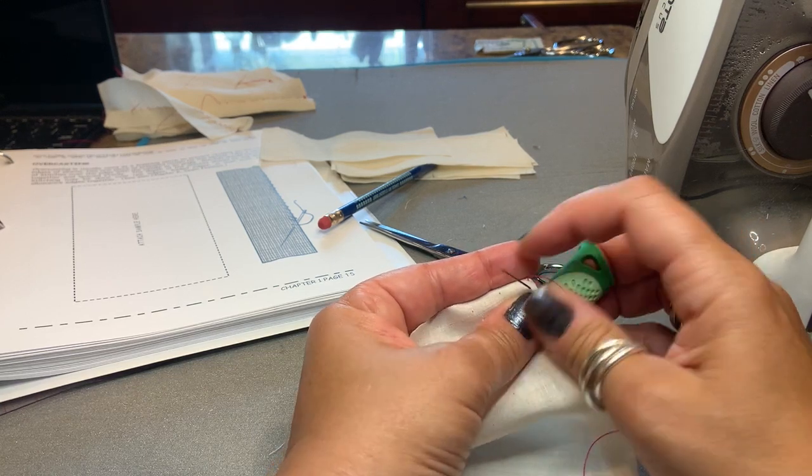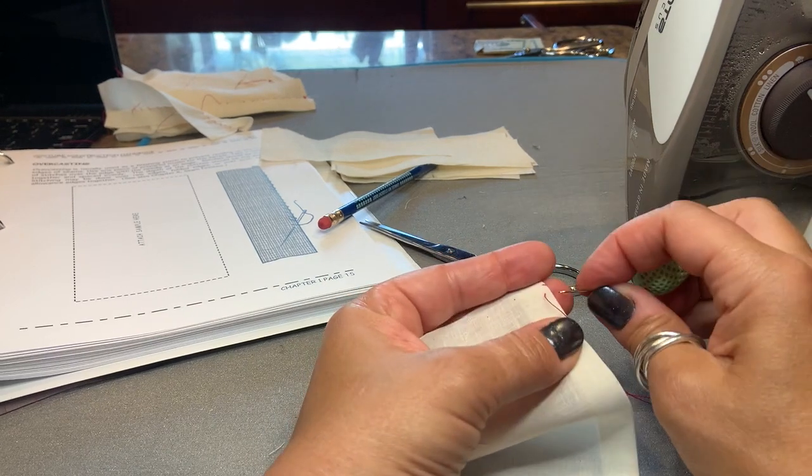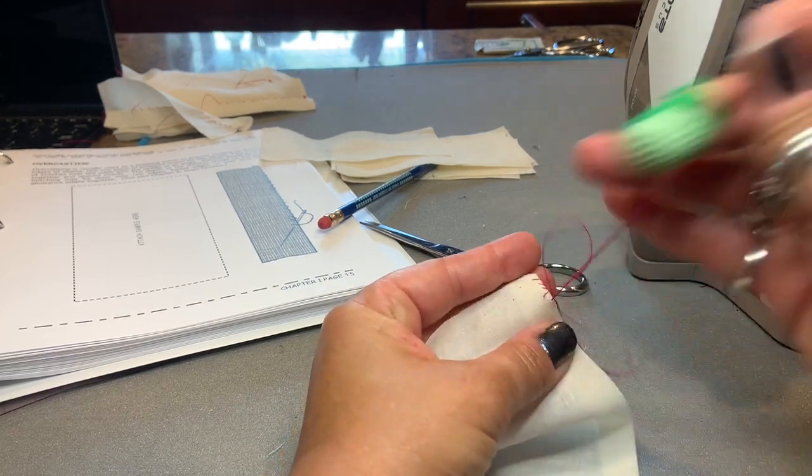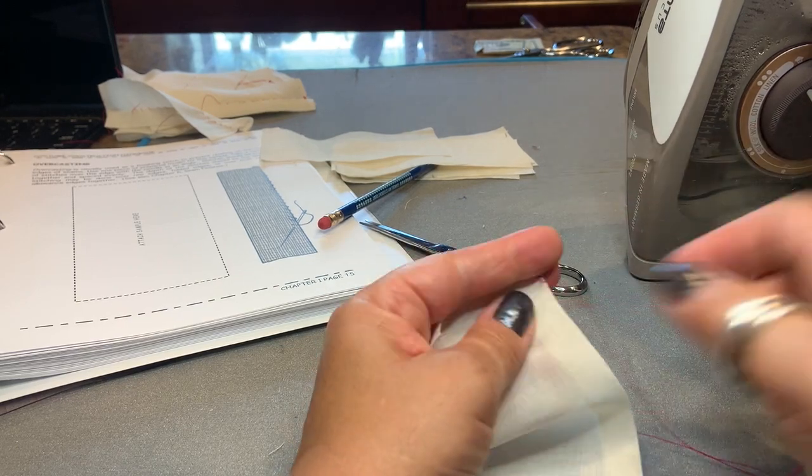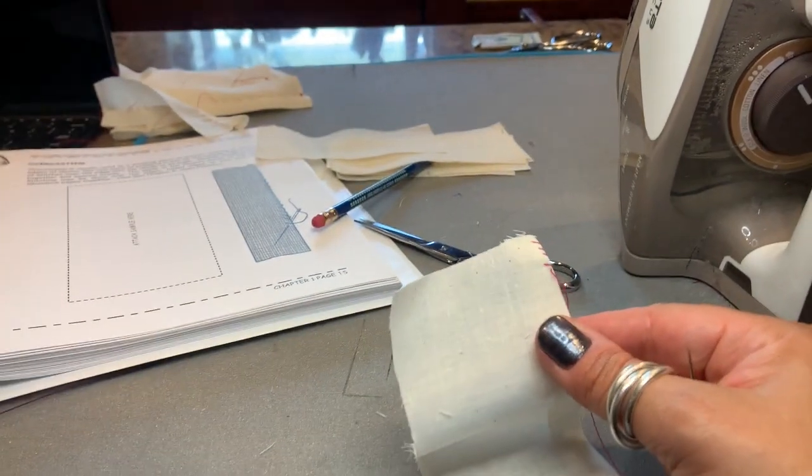You're just going to make stitches as close together as you can while also keeping them from looping over each other. This is not a stitch I'm very used to doing because I usually use the overlock machine for this, but it's the same principle.